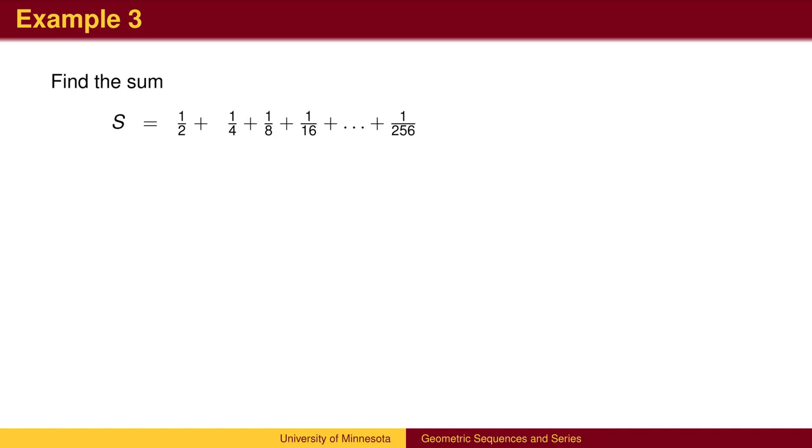We may also want to find the sum of a geometric series. The technique used here is to multiply the series by the common ratio. In this case, we multiply by 1 half.